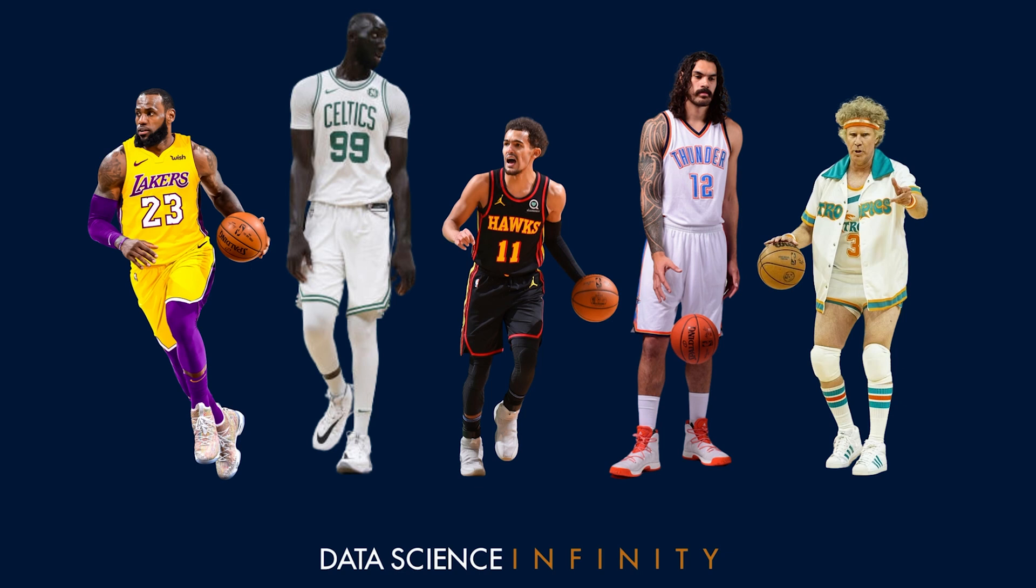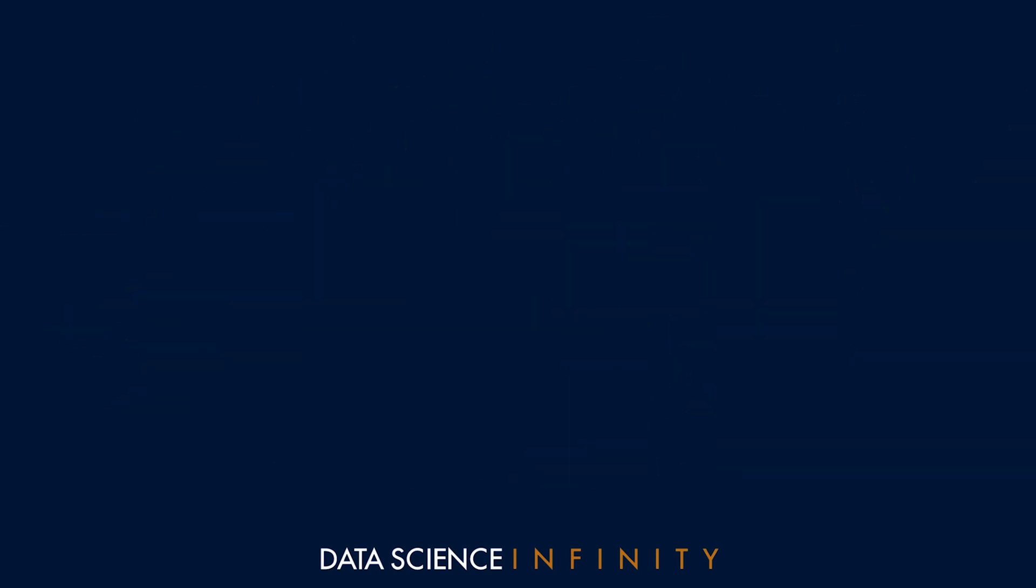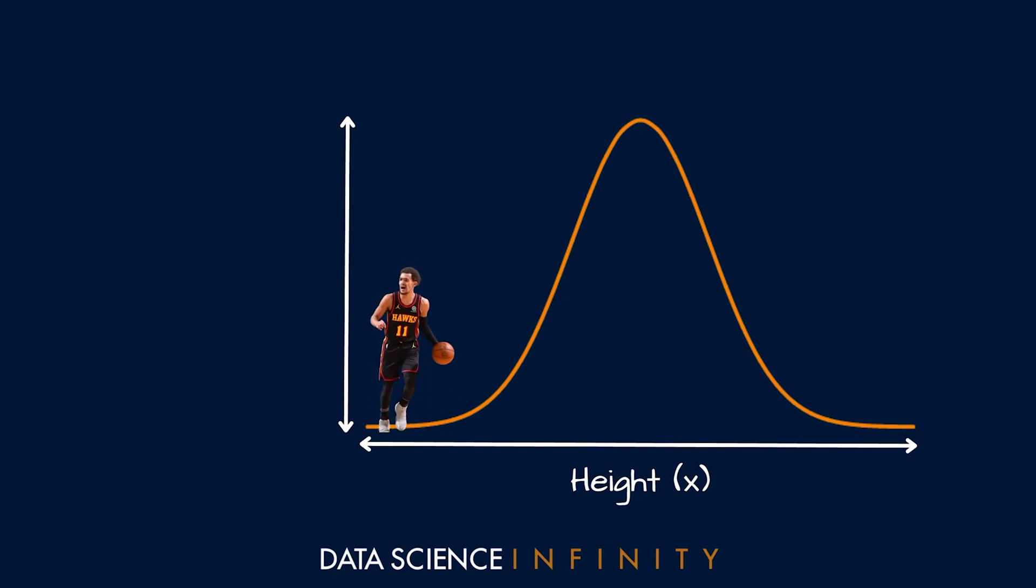Now there are about 450 players currently playing in the NBA. And if we knew the heights of all of those players, we could plot the distribution of those heights on a chart like this. This distribution specifically shows the spread of player heights along the x-axis, ranging between shorter players on the left to taller players on the right.